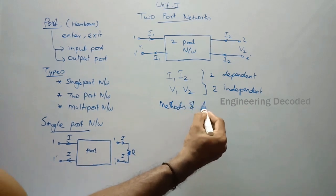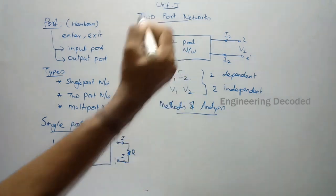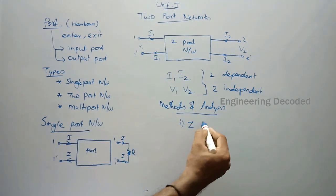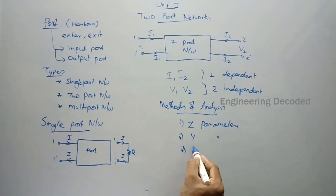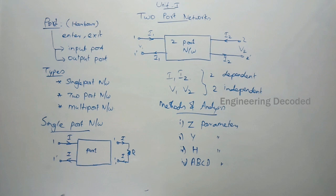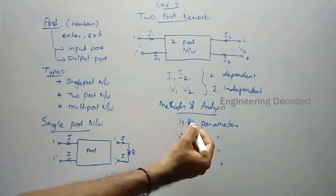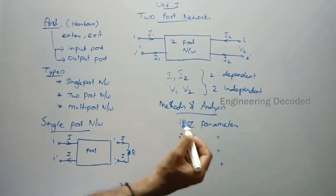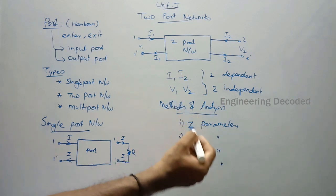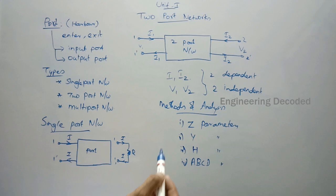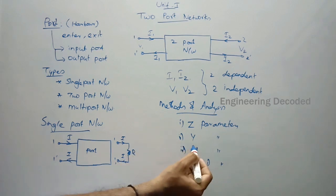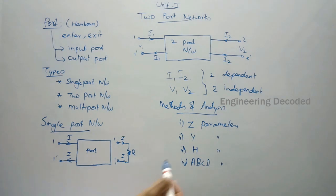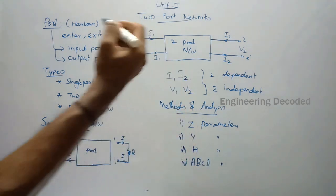We have four methods of analyzing a two-port network. The first one is Z parameters — Z is nothing but impedance, so we will analyze the impedance parameters of a network. The second is Y parameters — Y means admittance, which is the inverse of impedance, so we will analyze the admittance parameters. The third is H parameters — H means hybrid, so we will analyze the hybrid parameters. And the last one is the ABCD parameters of the two-port network.